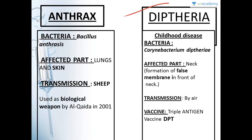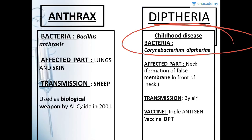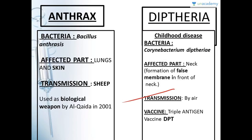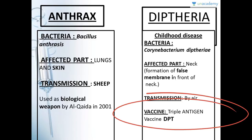Diphtheria is a childhood disease. The bacteria to remember is Corynebacterium diphtheriae. In this disease, a false membrane — a kind of swelling — forms in the front part of the neck. The transmission is by air. The vaccine for diphtheria is DPT — triple antigen vaccine — which stands for diphtheria, pertussis, and tetanus.